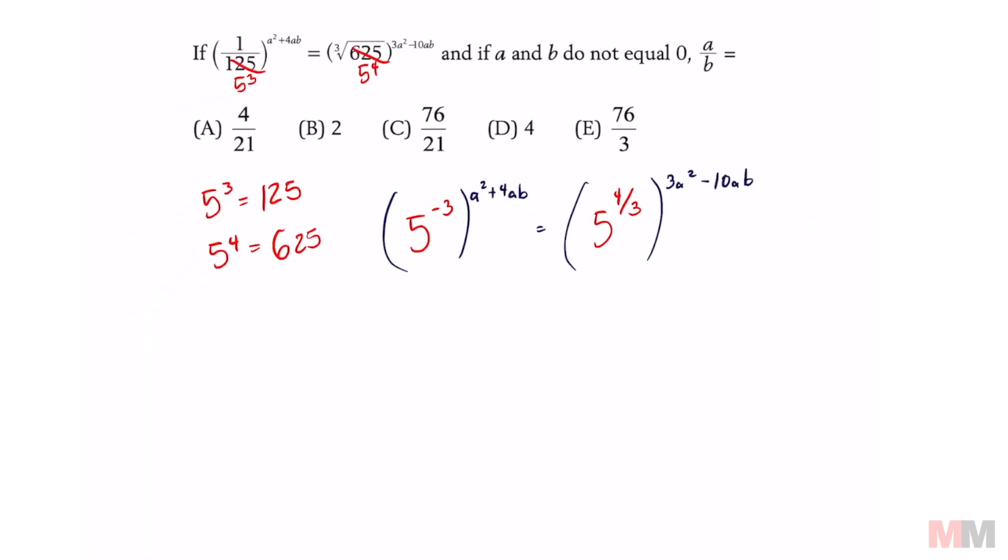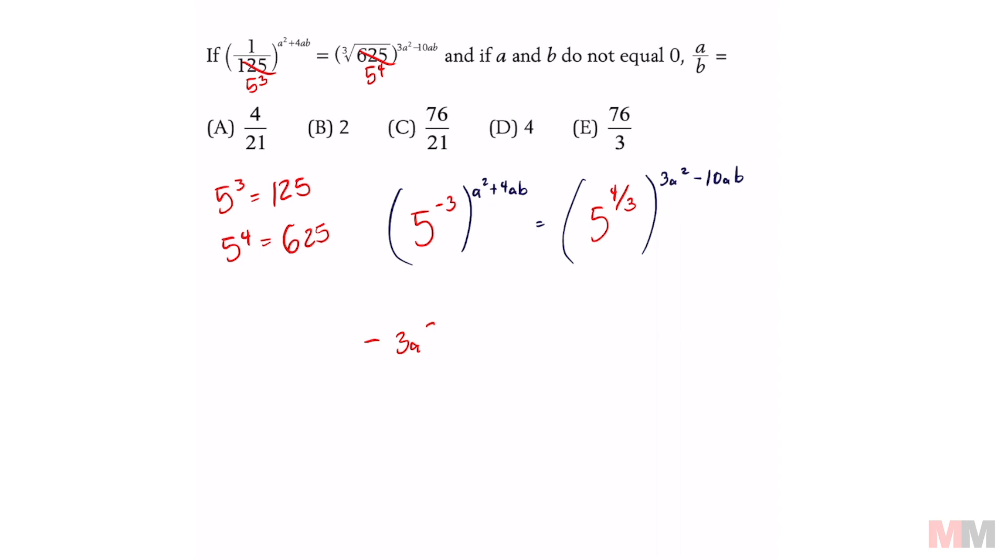Distributing this, I will get negative three a squared minus 12 a b. I'm multiplying the right side's exponents. We're going to get four a squared, because the threes are going to cancel out right here, minus 40 over three a b.